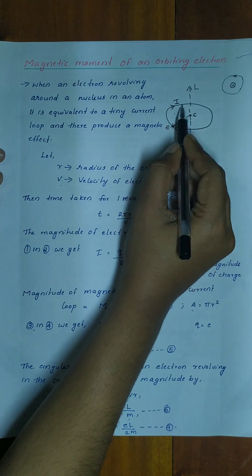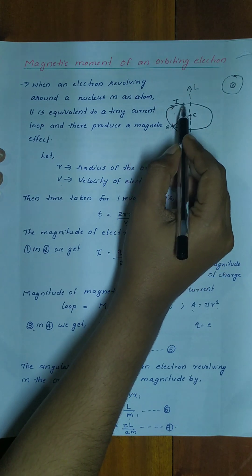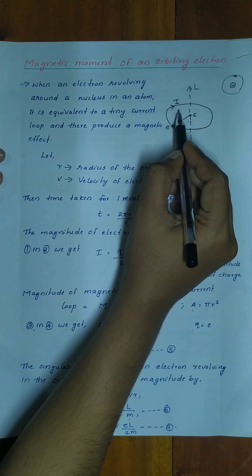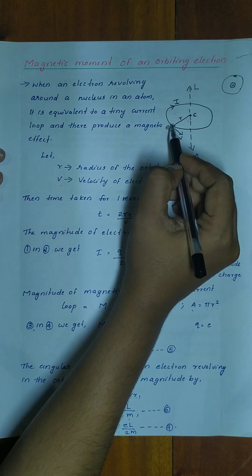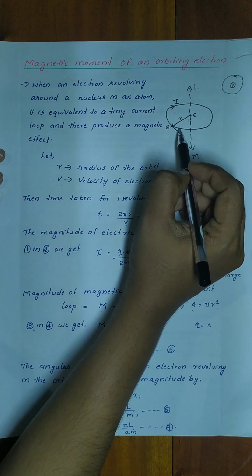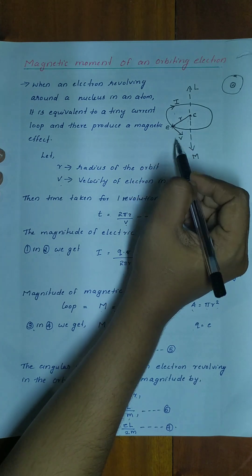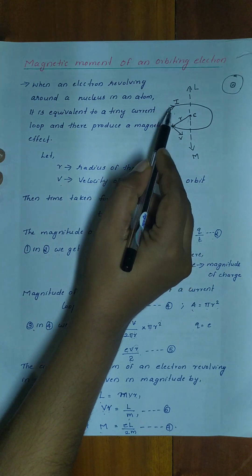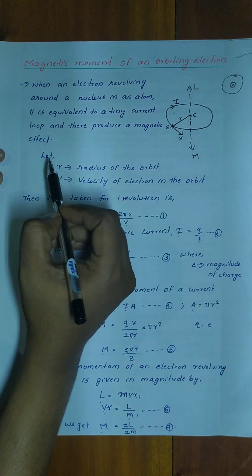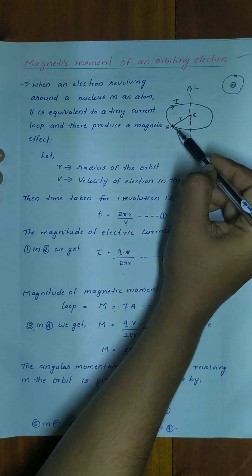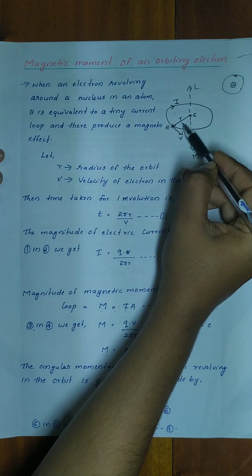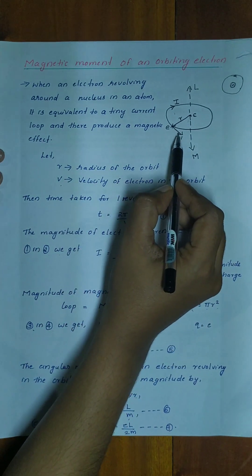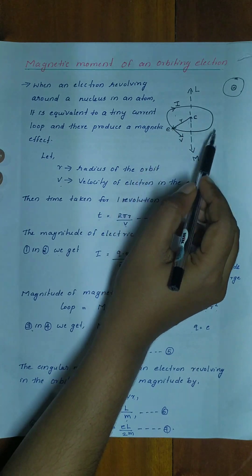When this electron revolves around the orbit, it will form a tiny current loop and will produce a magnetic field. Let r be the radius of the orbit, and v be the velocity of the electron in the orbit.